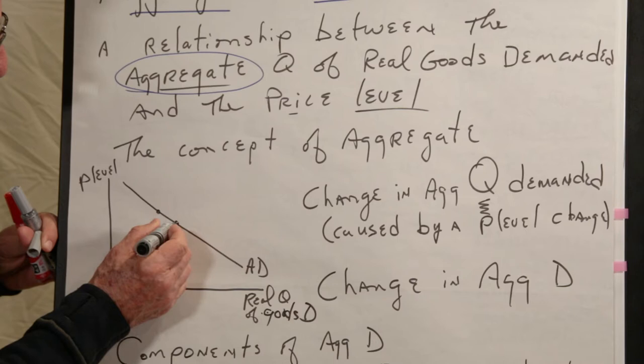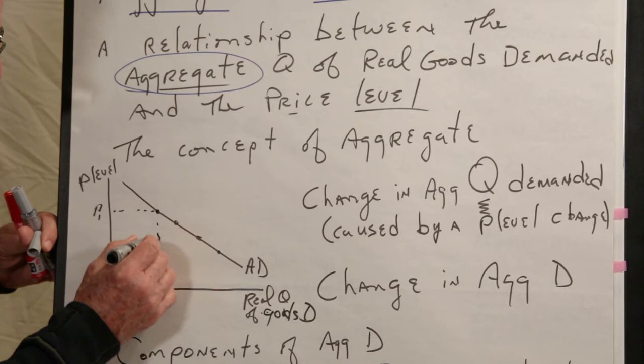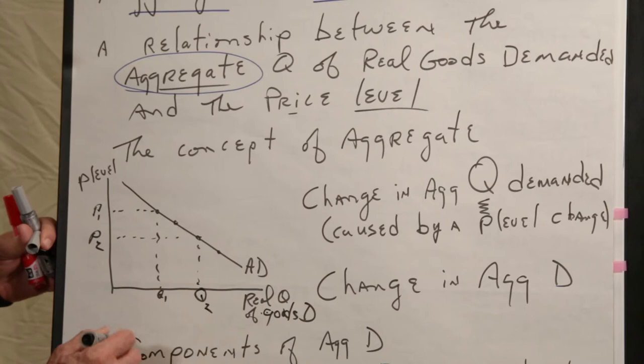And so any point on this aggregate demand curve tells you at this price level P1, this is the aggregate quantity of goods demanded Q1. And if the price level changes to P2, then the aggregate quantity of goods demanded will be Q2.